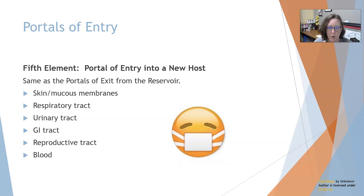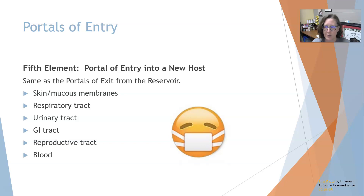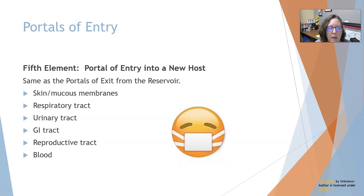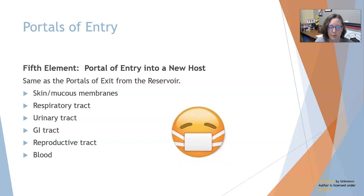The fifth element is the portal of entry into a new host — these are the same as the portals of exit from the reservoir. Skin and mucous membranes are portals of entry: for flu and coronavirus, if your hands are contaminated and you touch your nose, eyes, or mouth, you can get infected. The respiratory tract is entered by breathing in contaminated air droplets. Bacteria can also enter the urinary tract and, if motile, climb up into the bladder. The GI tract is usually entered by eating contaminated food.